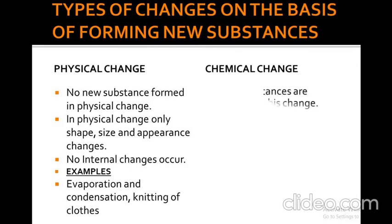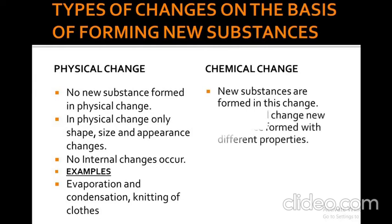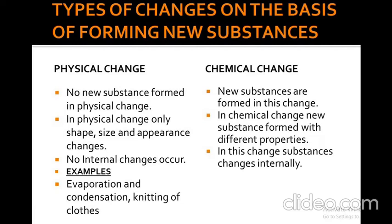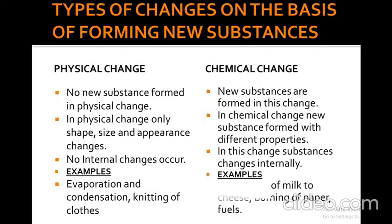In a chemical change, new substances are formed. The new substances will definitely have different properties than the previous ones. In this change, substances change internally, whereas in physical change they only change externally. For example, conversion of milk to cheese and burning of paper or fuels. These are chemical changes.